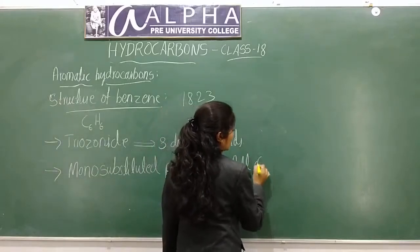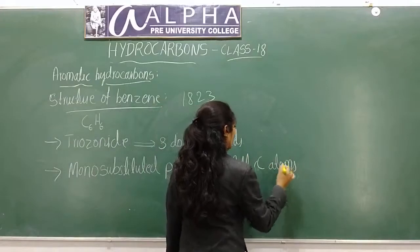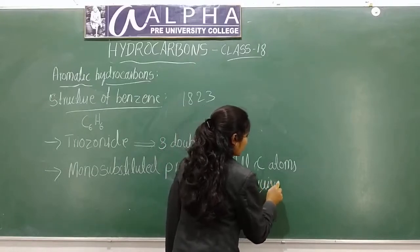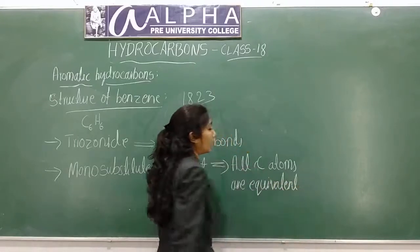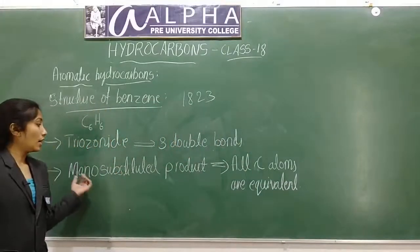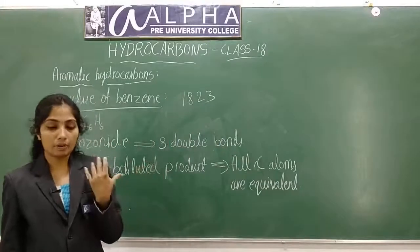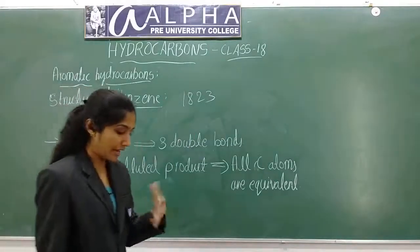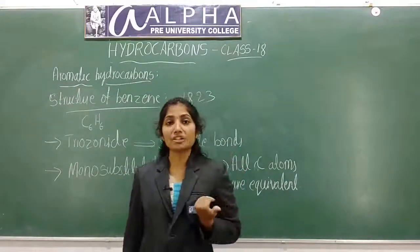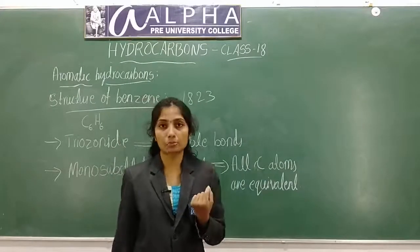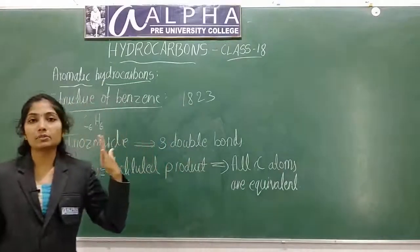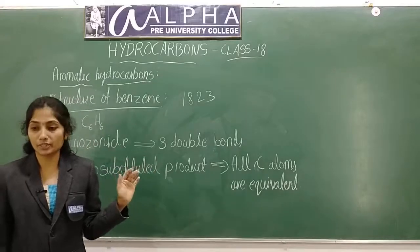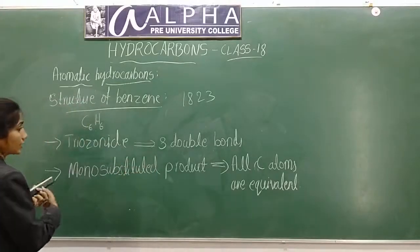The mono-substituted product indicated that all the carbon atoms are equivalent. Based on this evidence — triozonide formation and mono-substituted product — Kekulé proposed a structure for benzene.